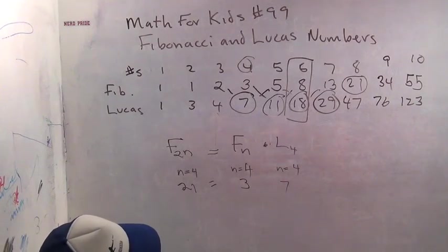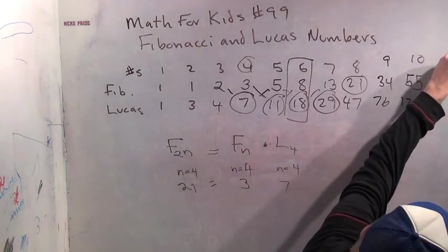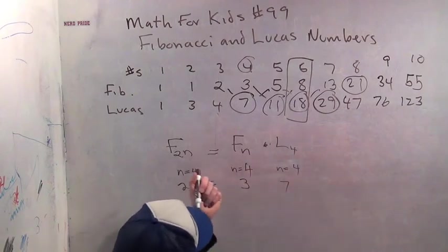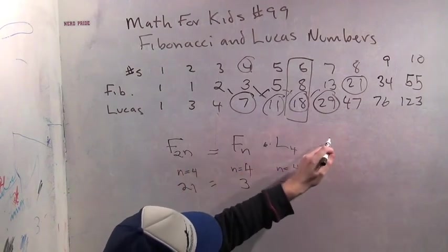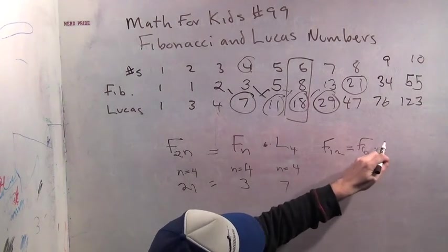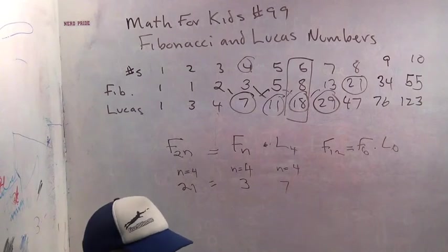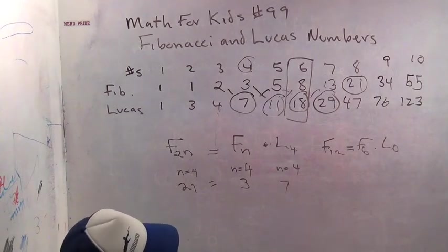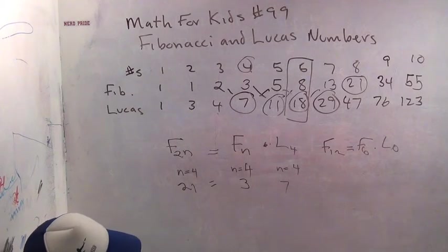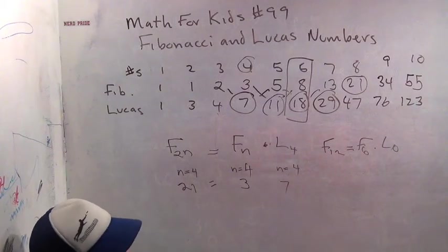Isn't that interesting? So this tells us we can actually figure out what Fibonacci number 12 is right now from this pattern, because Fibonacci number 12 should be Fibonacci number 6 times Lucas number 6, which is 8 times 18. And what is 8 times 18? It's 80 plus 64. Which is? It's 144. Yeah, it's 12 squared. Hey, how about that?